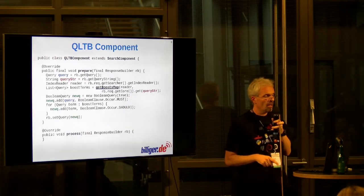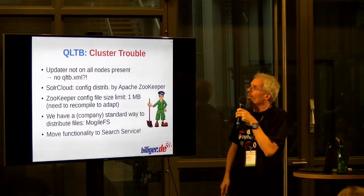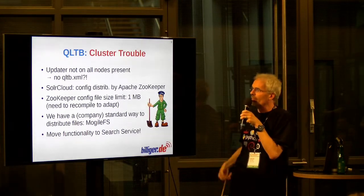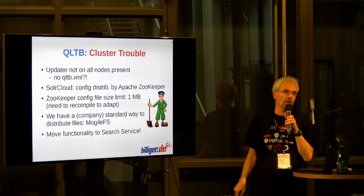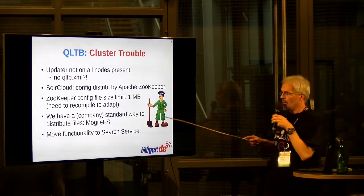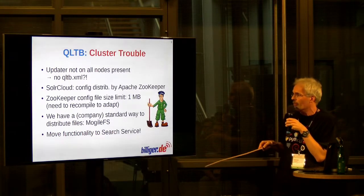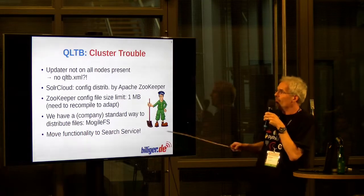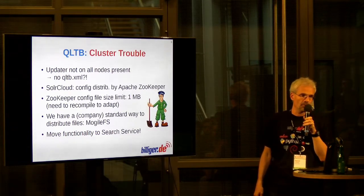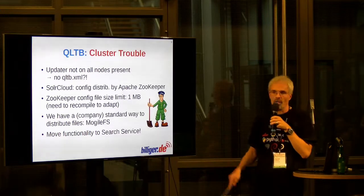Now, this doesn't look too bad — where could cluster trouble strike? It strikes in the form of the updater. The updater is no longer present on all nodes; the second server doesn't have one. So how do we get the QLTB XML to all the components? You might be thinking that's a job for Apache Zookeeper — the distributed configuration management tool. In fact, that's exactly right. But there's a problem: Zookeeper can only handle files up to one megabyte in size, and our XML file is typically five to ten times that size. So Zookeeper is out.